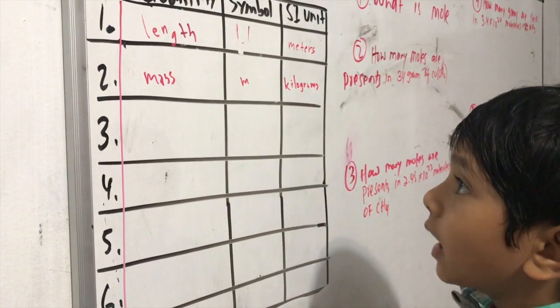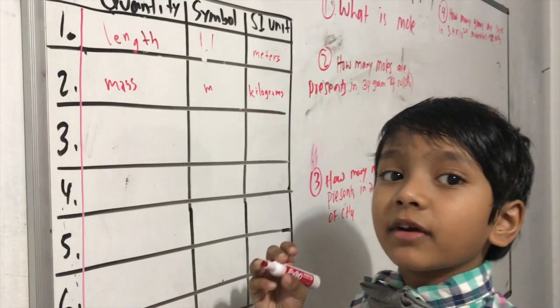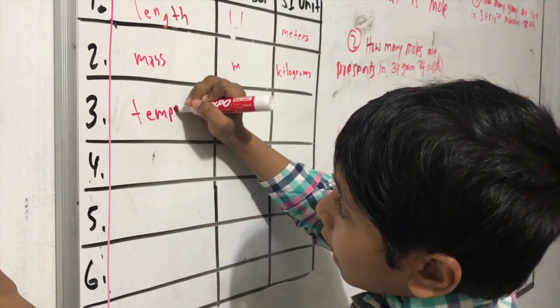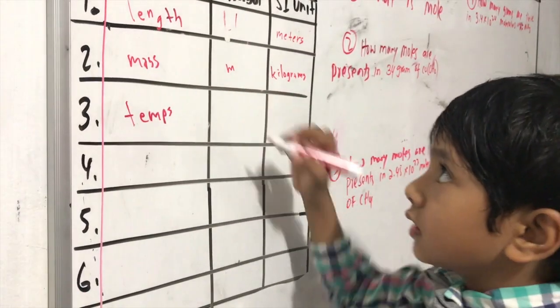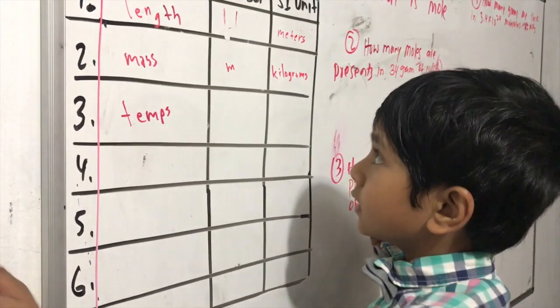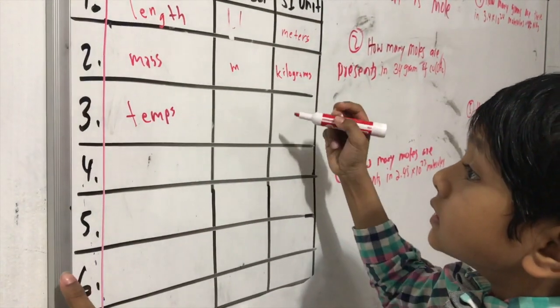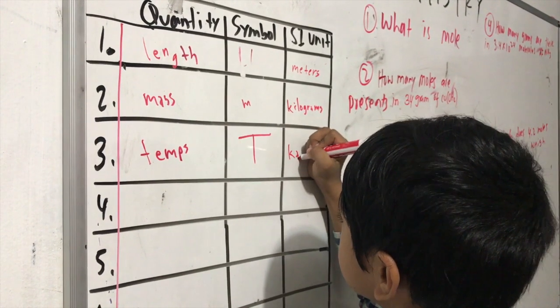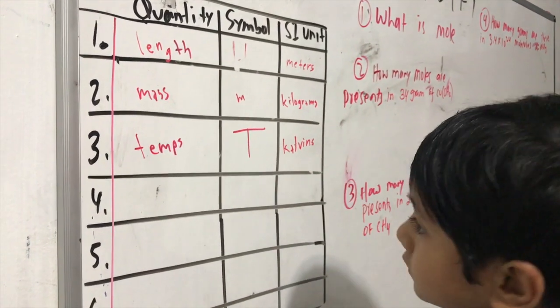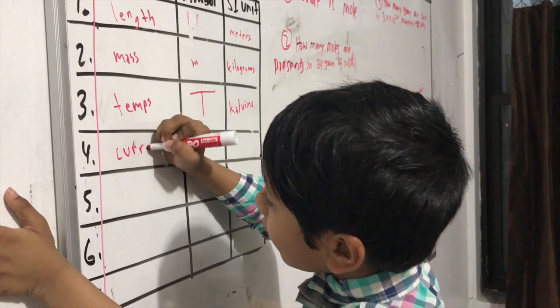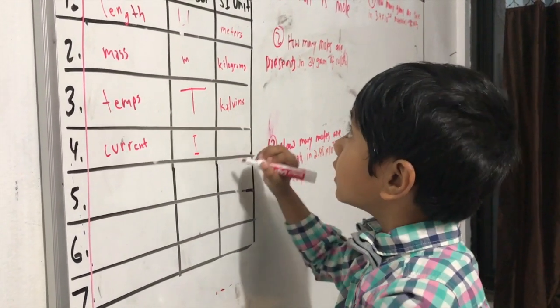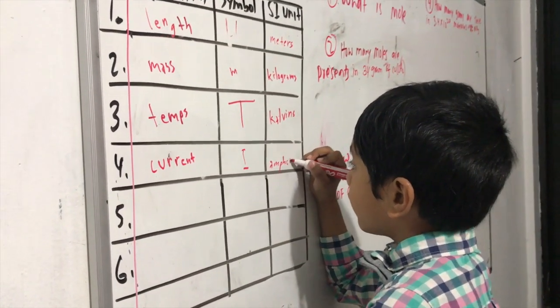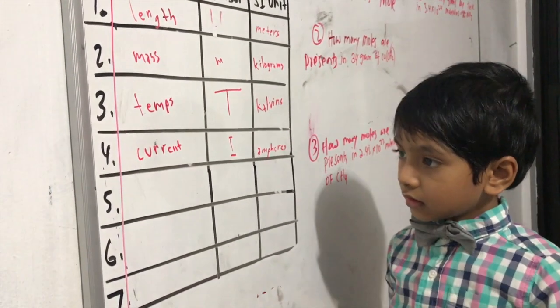Quantity number three is temperature. The SI unit is Kelvins. Yes, Kelvins. The symbol is I. And the SI unit is amperes. The shorthand for amperes is amps.